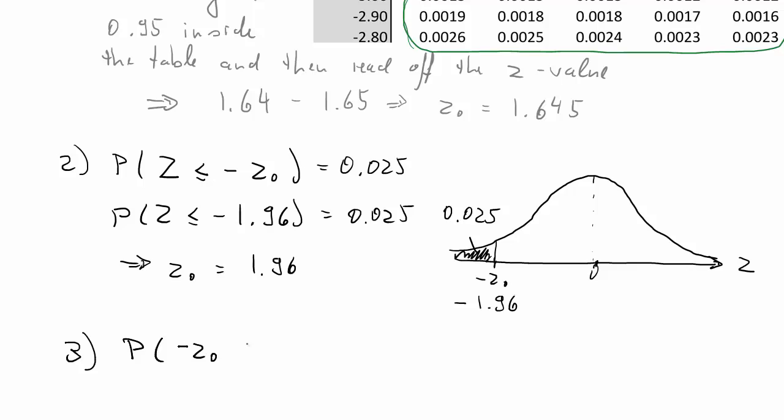Third question. We have a probability that Z is larger or equal to negative z0, but smaller or equal to positive z0. And that probability is 95%.